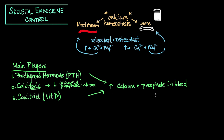Another key theme: as calcium or phosphate increases in the blood, there is a concurrent decrease of these ions in bone, because it must be coming from the bone. The opposite is also true — whenever calcium and phosphate decrease from the bloodstream, it is because they are being deposited back into bone.